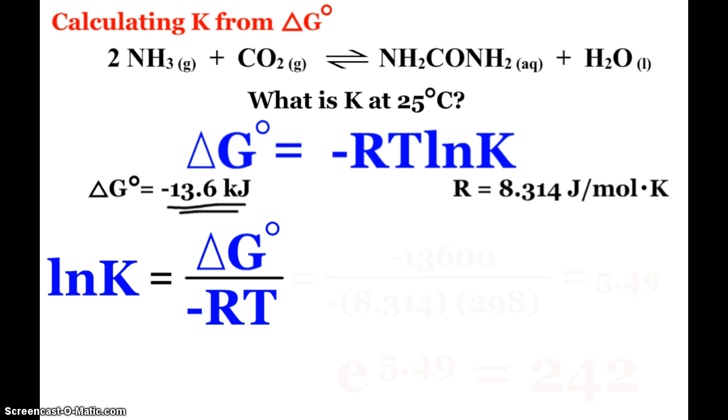What does that mean again? It means this reaction is thermodynamically favored at this temperature and as it is written and that value means that at equilibrium we should expect to have products being favored and so hopefully when we calculate K here we should see a value that shows us that products are favored at equilibrium.